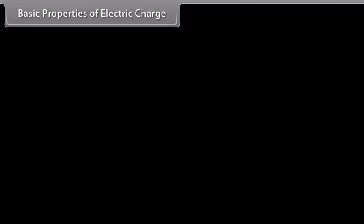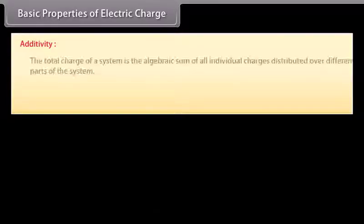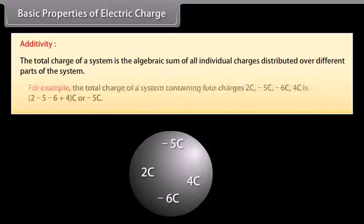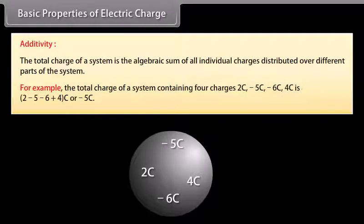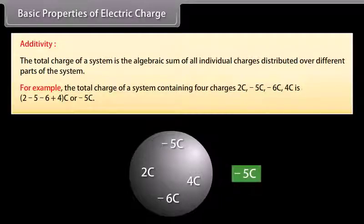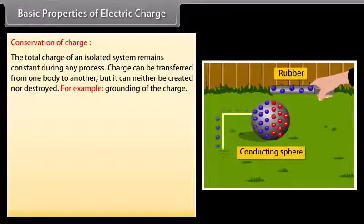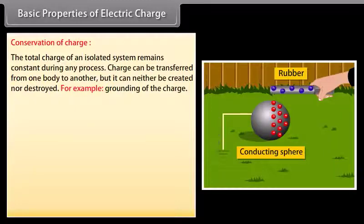Basic properties of electric charge — Additivity: The total charge of a system is the algebraic sum of all individual charges distributed over different parts of the system. For example, the total charge of a system containing four charges — 2C, −5C, −6C, and 4C — is equal to −5C. Conservation of charge: The total charge of an isolated system remains constant during any process. Charge can be transferred from one body to another, but it can neither be created nor destroyed.